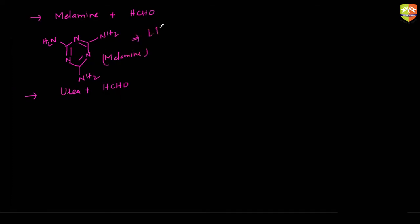Melamine has NH2 groups — here we have NH2, NH2, and here NH2 with double bonds. This is the structure of melamine. The question they ask is: how many lone pairs are present in melamine? The answer is six lone pairs — one lone pair on each nitrogen atom. This exact question has been asked in JEE exam, but they don't give the structure; they just write the name. So the structure you must know.